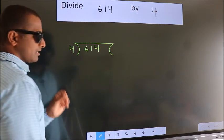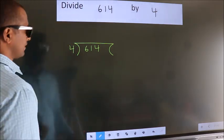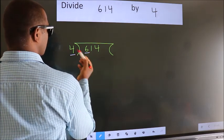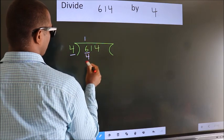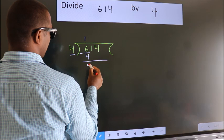This is your step 1. Next, here we have 6, here 4. A number close to 6 in 4 table is 4 ones, 4. Now we should subtract. We get 2.